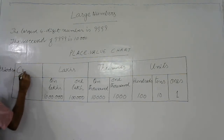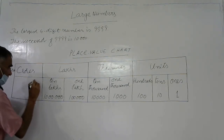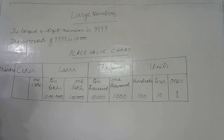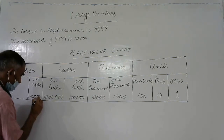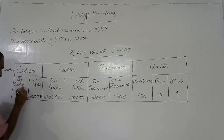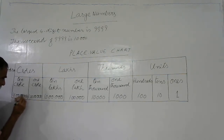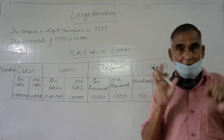After the lakhs period, the next period is the crores period. This crores period is again divided into two places. One crore is 1 followed by seven zeros. The next place is ten crores, which is 1 followed by eight zeros. This completes the place value chart.